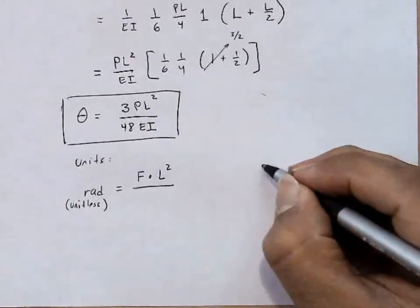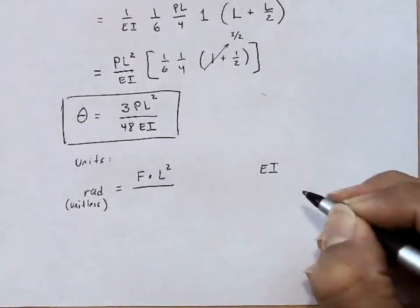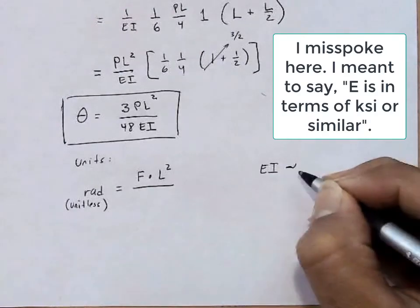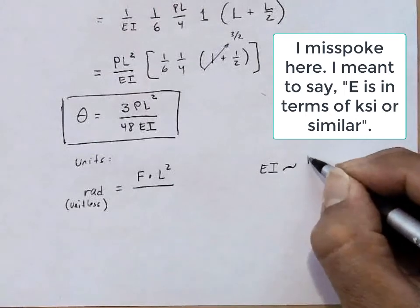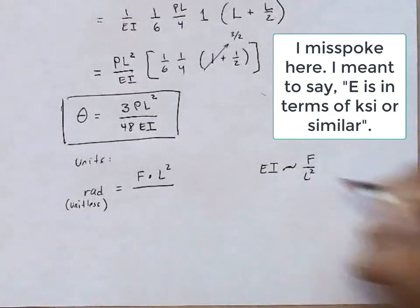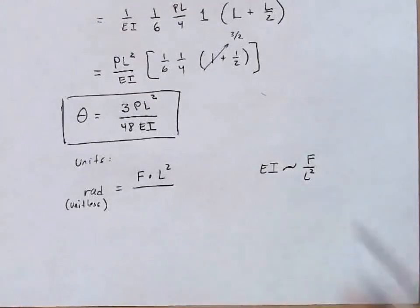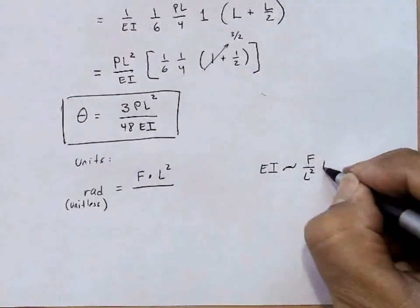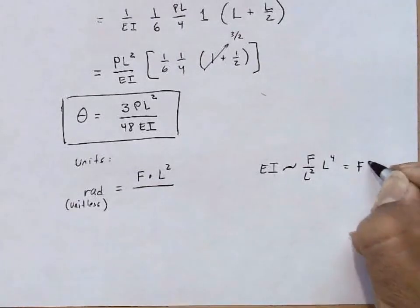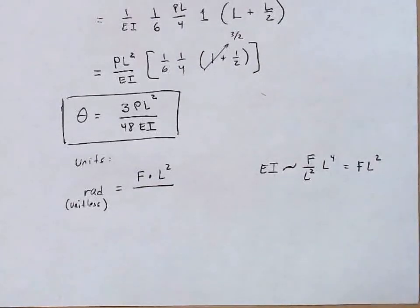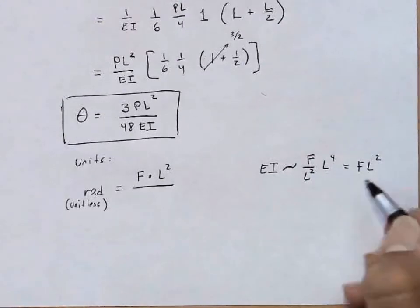P force L is length squared. And let's do an aside here. EI. EI is going to be a quantity like KSI. So force per length squared. I, the moment of inertia, is going to be a quantity like inches to the fourth, millimeters to the fourth. So length to the fourth. So this gives us force length squared. So pretty much just remember this. EI, force length squared.